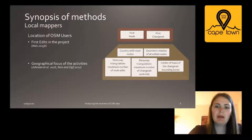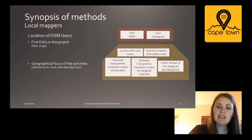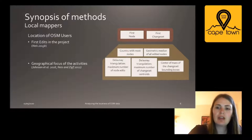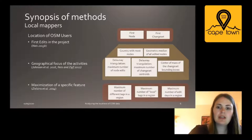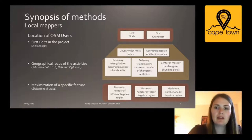Other approaches focus on the activity area of a mapper. With the Delaunay triangulation, one can determine for each OSM mapper the area with the maximum number of node edits. More easily, the country with the most edited nodes of a mapper can be determined. Also, the center of mass of all changeset bounding boxes can be calculated. Johnson et al. proposed calculating the geometric median of all edited nodes of a user. Other approaches consider the location of a mapper in the region where they had the most edited days, or the maximum number of different tags in a region.